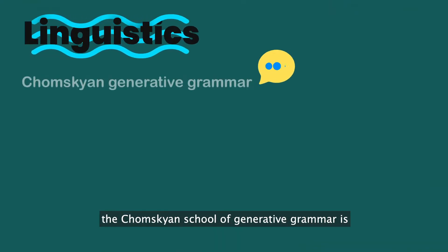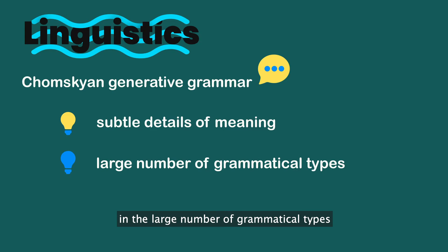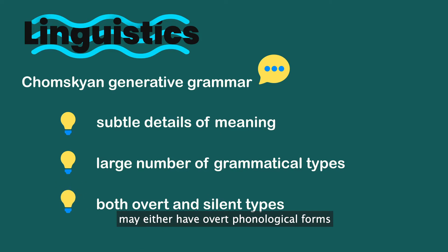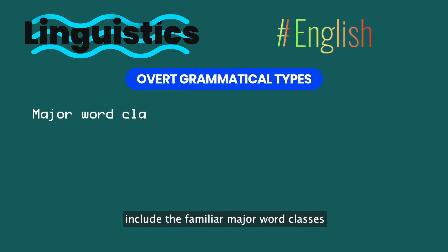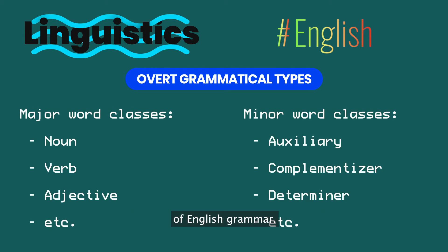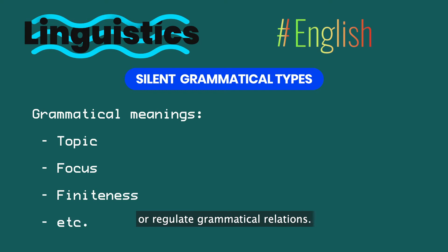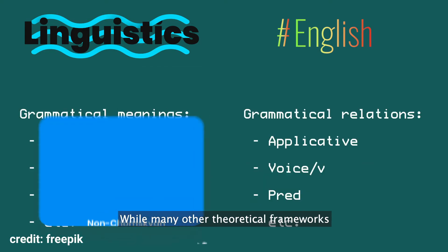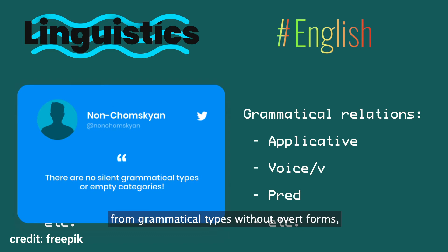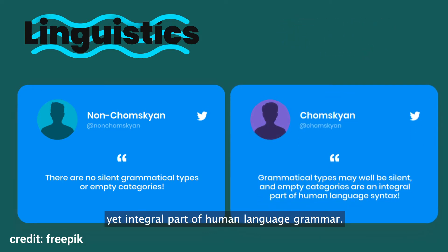An important merit of the Chomskyan school of generative grammar is that it goes into the subtle semantic details of human language, and this is reflected in the large number of grammatical types linguists have proposed. Grammatical types in the Chomskyan framework may either have overt phonological forms, or merely silently contribute to semantic interpretation. Overt grammatical types in English include the familiar major word classes as well as some minor word classes — the visible building blocks of English grammar. Silent grammatical types, on the other hand, include types that express subtle grammatical meanings or regular grammatical relations. While many other theoretical frameworks either ignore or abstract away from grammatical types without overt forms, the Chomskyan framework takes them seriously and treats them as an invisible yet integral part of human language grammar.